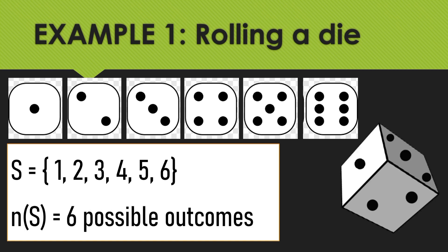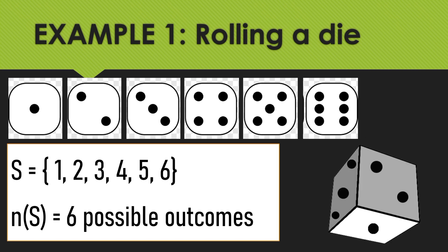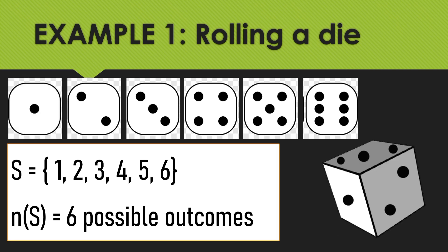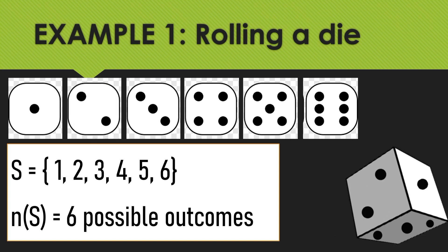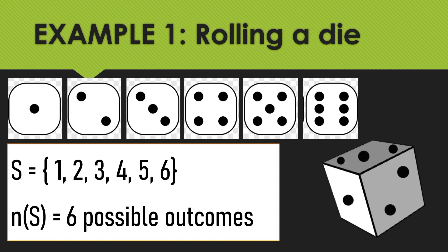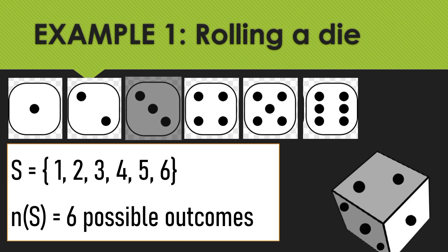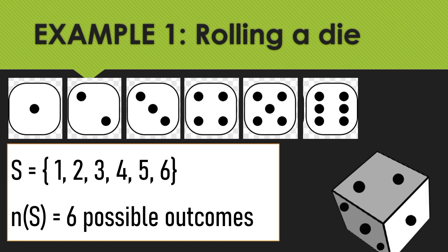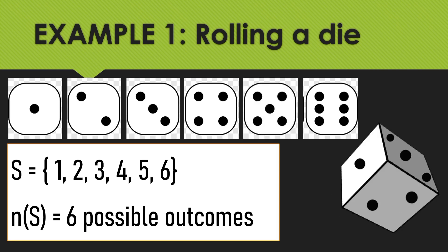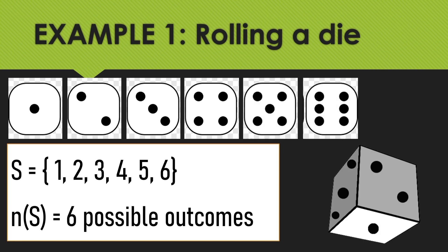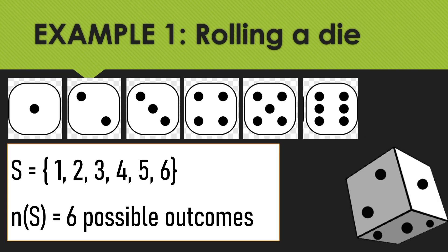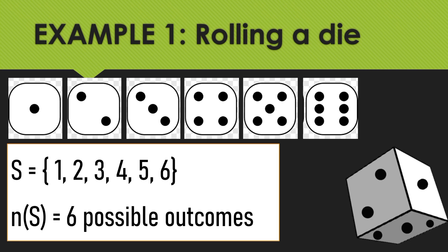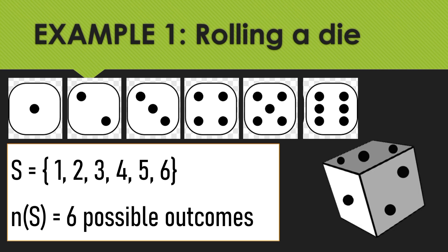There are 6 possible outcomes when rolling a die. The first face has 1 dot, the second face has 2 dots, the third face has 3 dots, the fourth face has 4 dots, the fifth face has 5 dots, and the sixth face has 6 dots. That's why our total possible outcomes is 6.